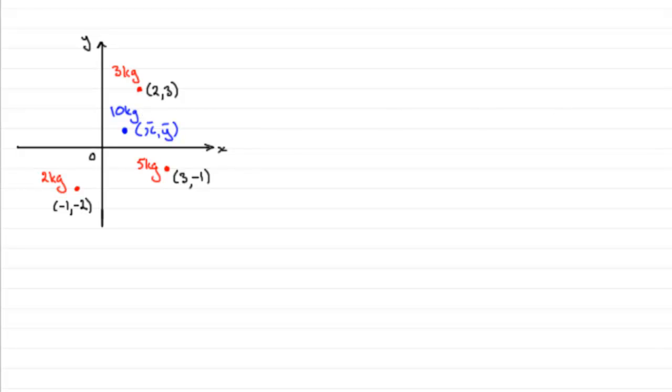So if I'm taking moments about the x and y axis, I'm going to have that total mass 10 being multiplied by (x bar, y bar). And that's going to equal 2 times (-1, -2) plus 3 multiplied by the column vector (2, 3), and finally plus the 5 kilogram mass being multiplied by the column vector (3, -1).